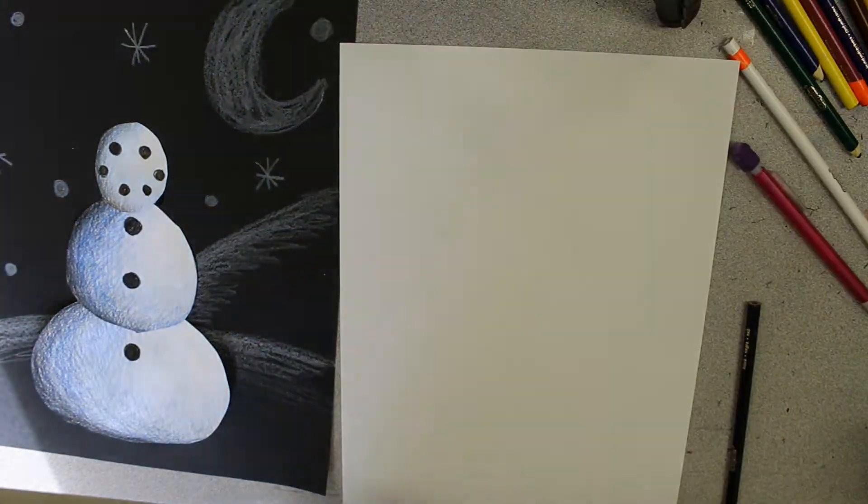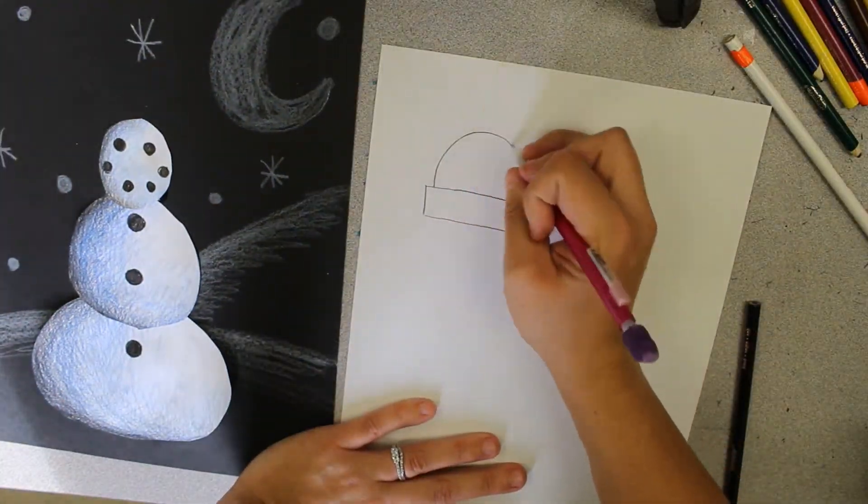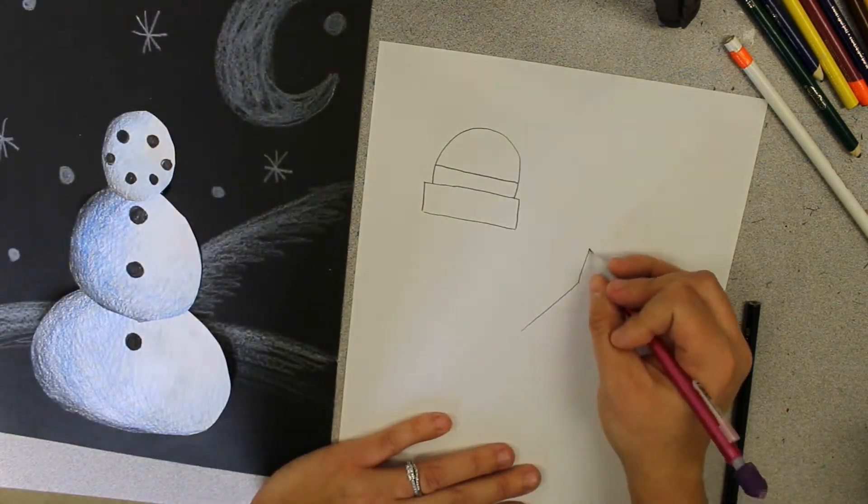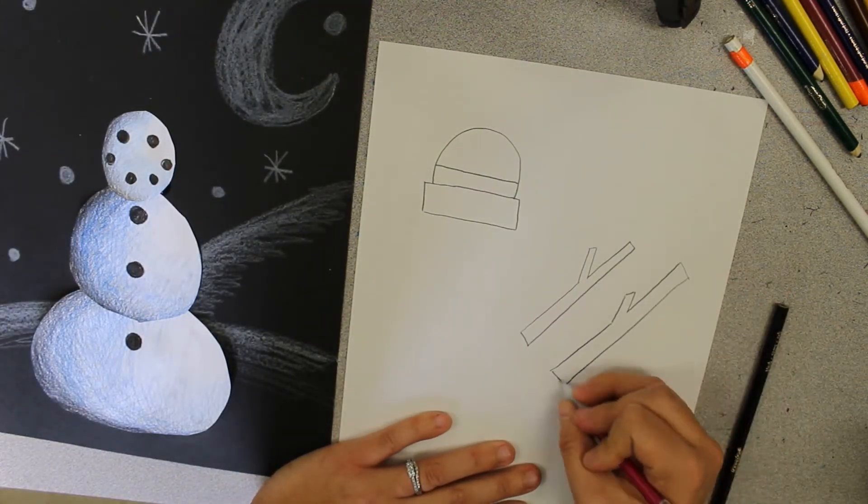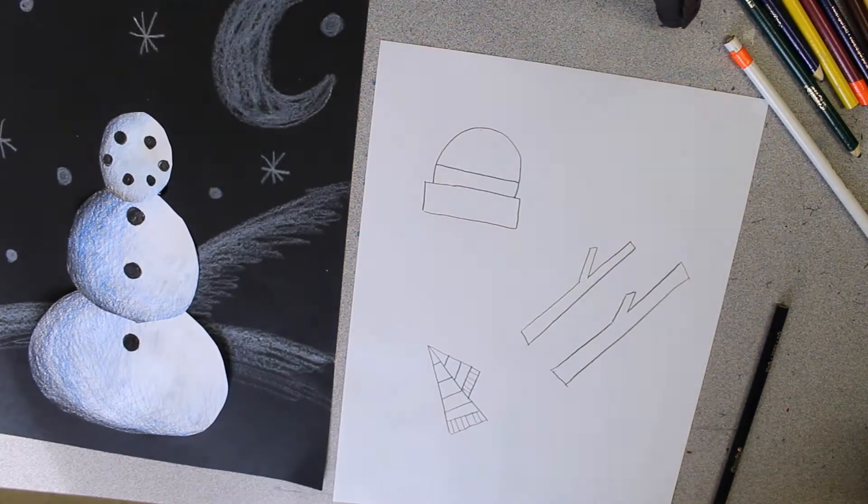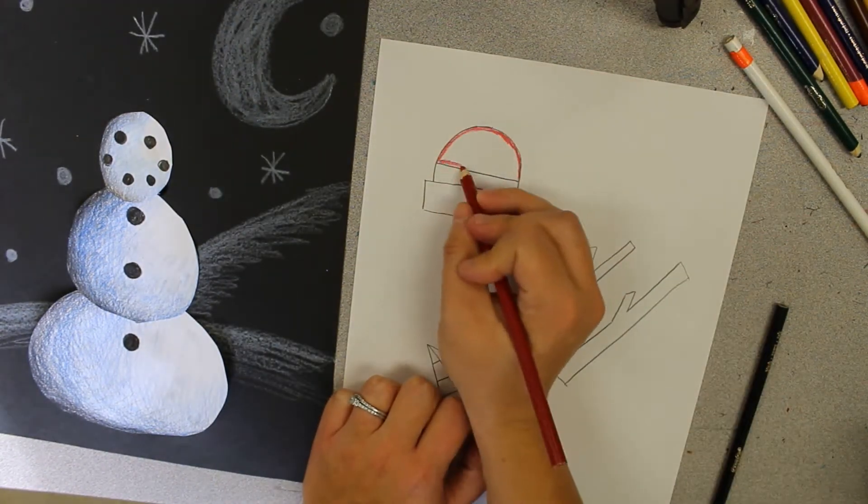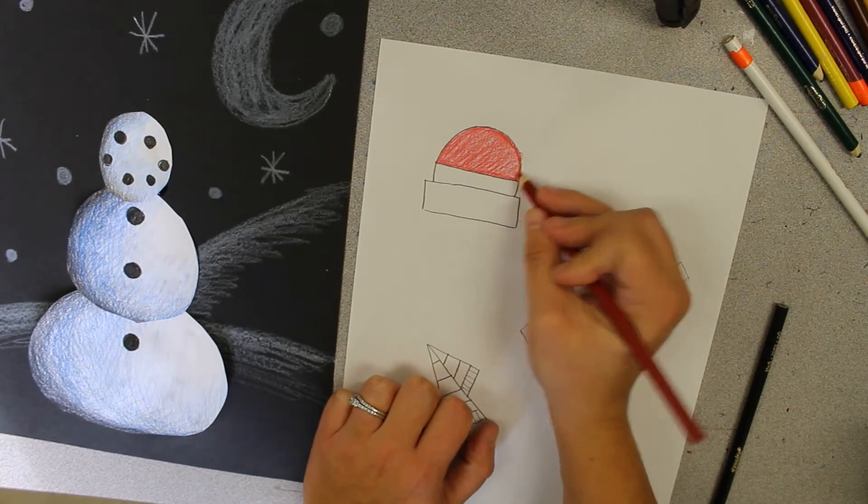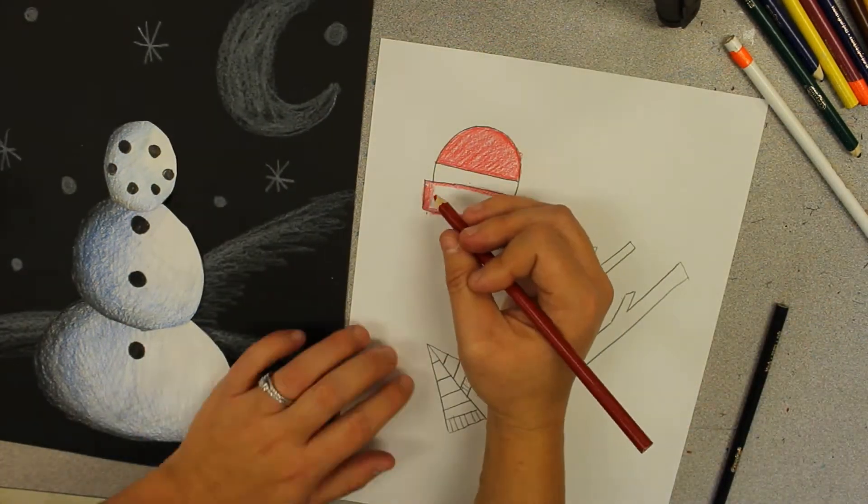On a separate sheet of paper we're going to make some snowman accessories. These are some extra things that you can add to your snowman. I added a hat, some twigs for arms, and a colorful scarf. Now you can add more than just these things if you'd like, or you can add different things if you'd like to too.